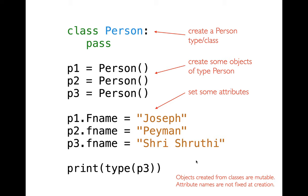There are lots of advantages to doing it this way, and we're going to be getting into those. One small advantage is that if I print the type of this, it's not going to say dictionary — it's going to say that p3 is referring to a person object. That's just a very small benefit; we're going to see many more.